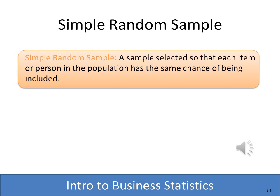One of the most common methods of probability sampling is called simple random sampling, where every person in the population has an equal chance of being included. There are a couple of methods we use to accomplish this, which we'll describe in the next couple of slides.